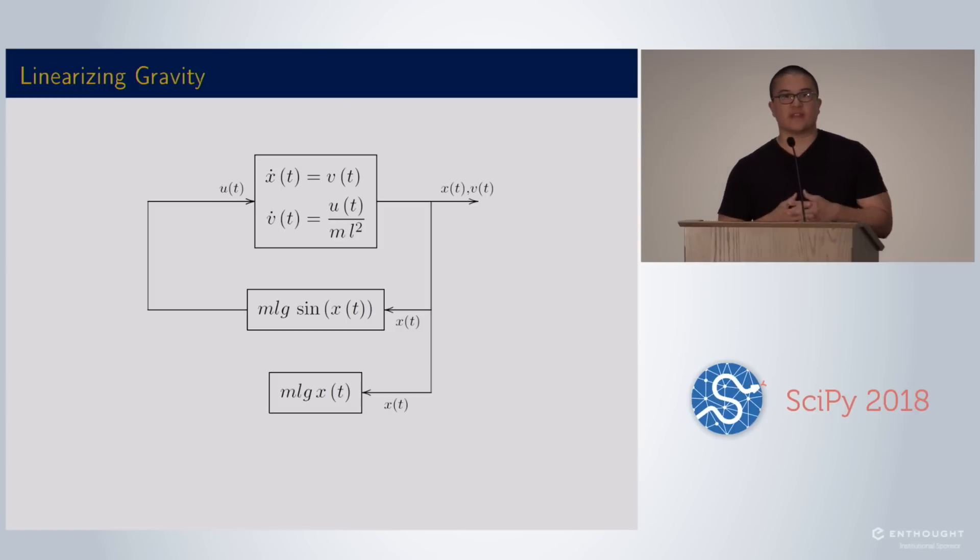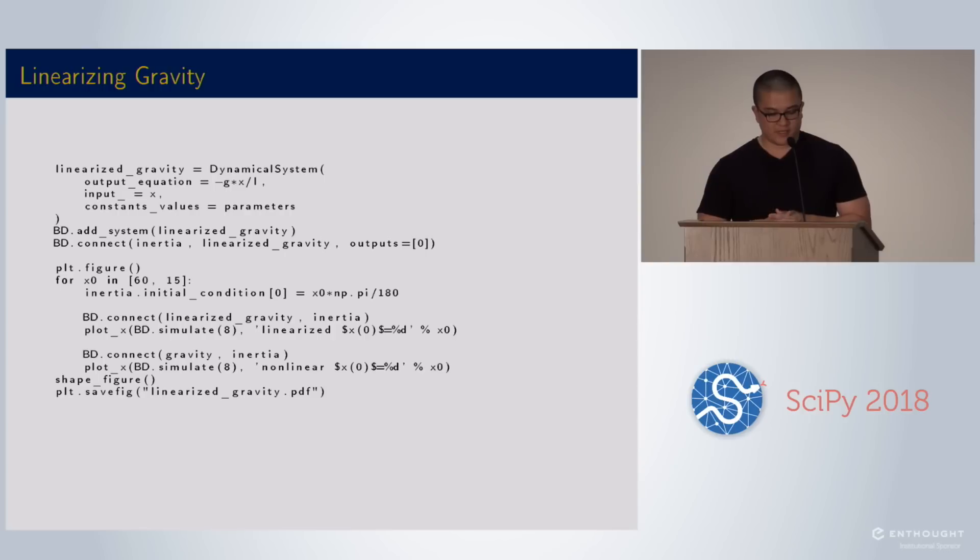Now we're going to start taking advantage of the actual block diagram approach of system analysis. The inertia system is a linear system in the state and the input. That makes a lot of things really simple, but the gravity term is not. It has that sine of X, so that makes it nonlinear. A common linearization we do is to just approximate sine by X. What's nice about block diagrams is that we can just change the input back and forth. We don't lose track of all the different parts that are going on.